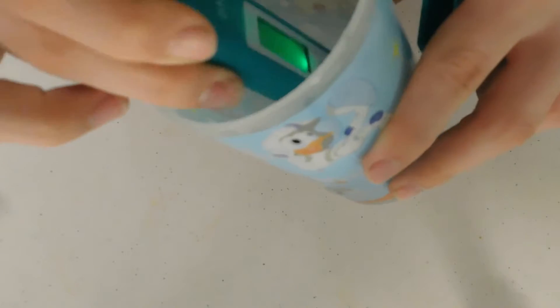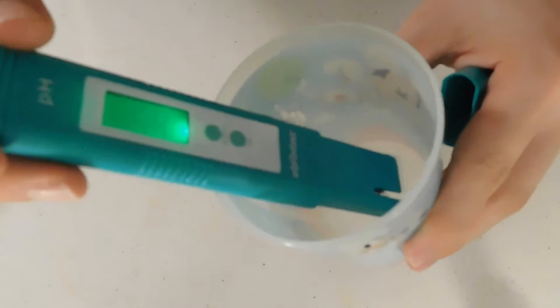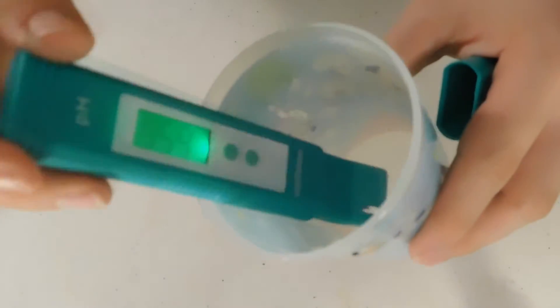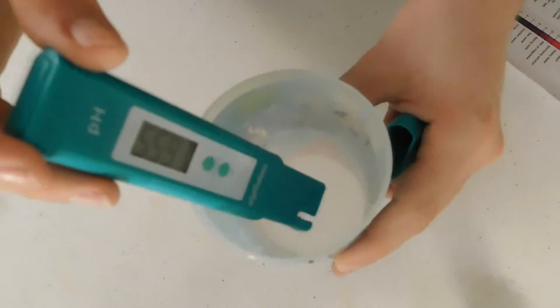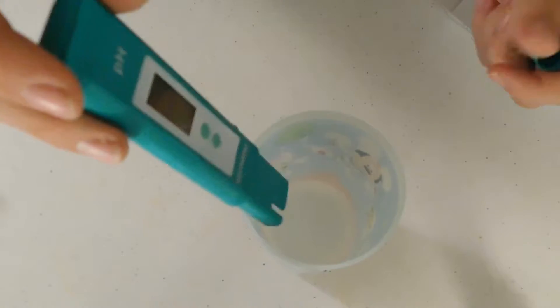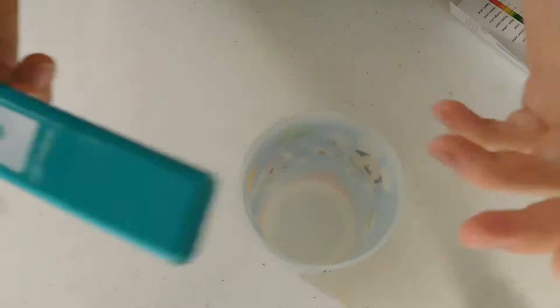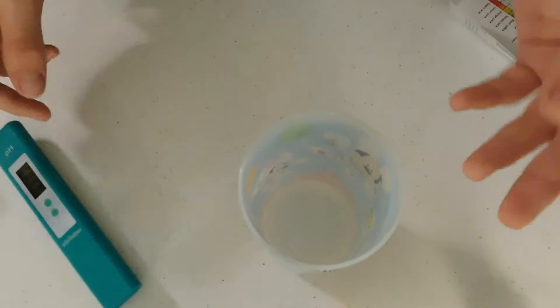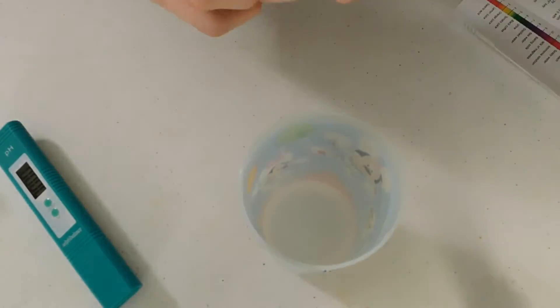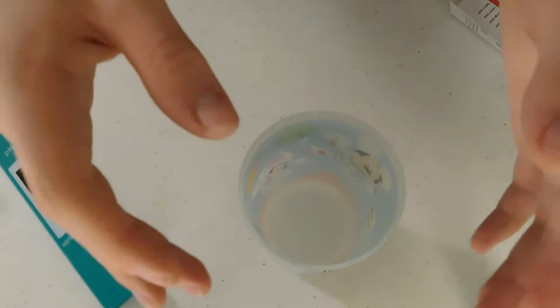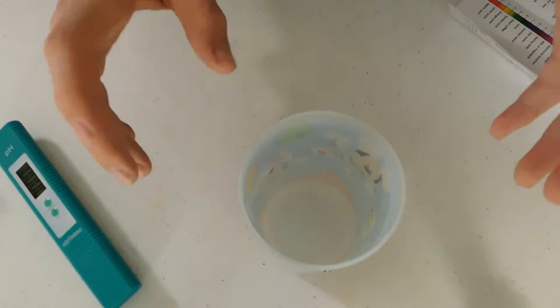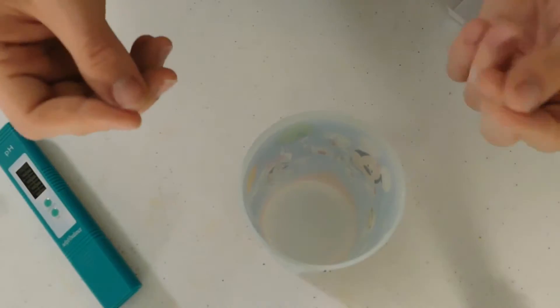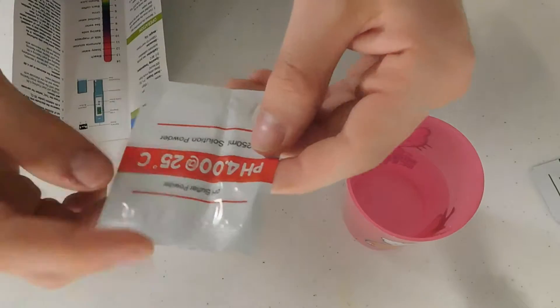It probably has something to do with the amount of water I put in and that it wasn't distilled to start with, so it wasn't a pure 7 originally. I'm sure the minor difference doesn't matter in home use. If you had to have it at an exact pH it would matter more, but in a home environment it shouldn't matter a super big amount.